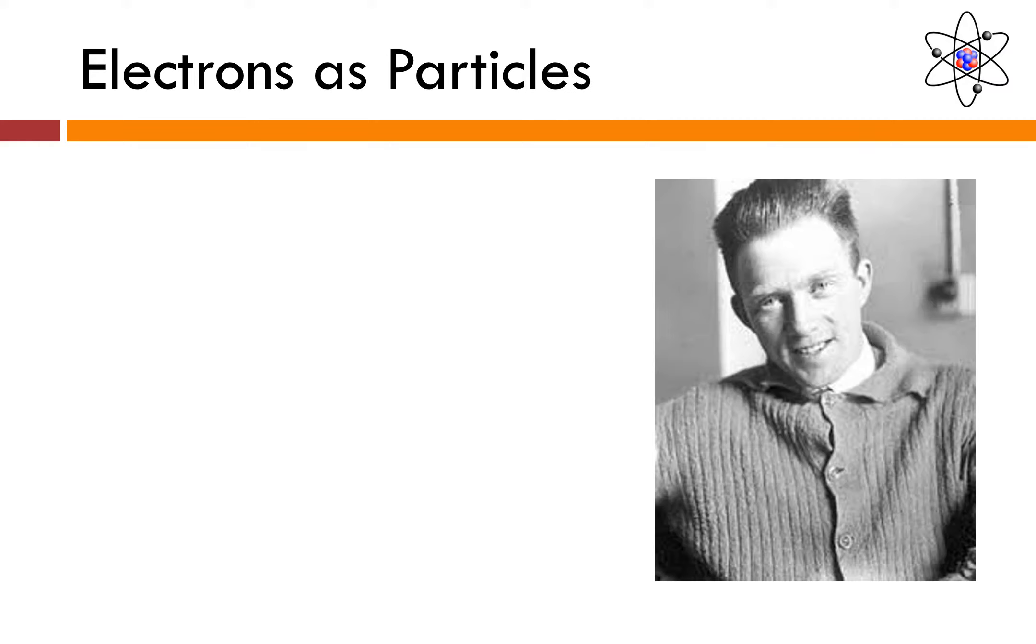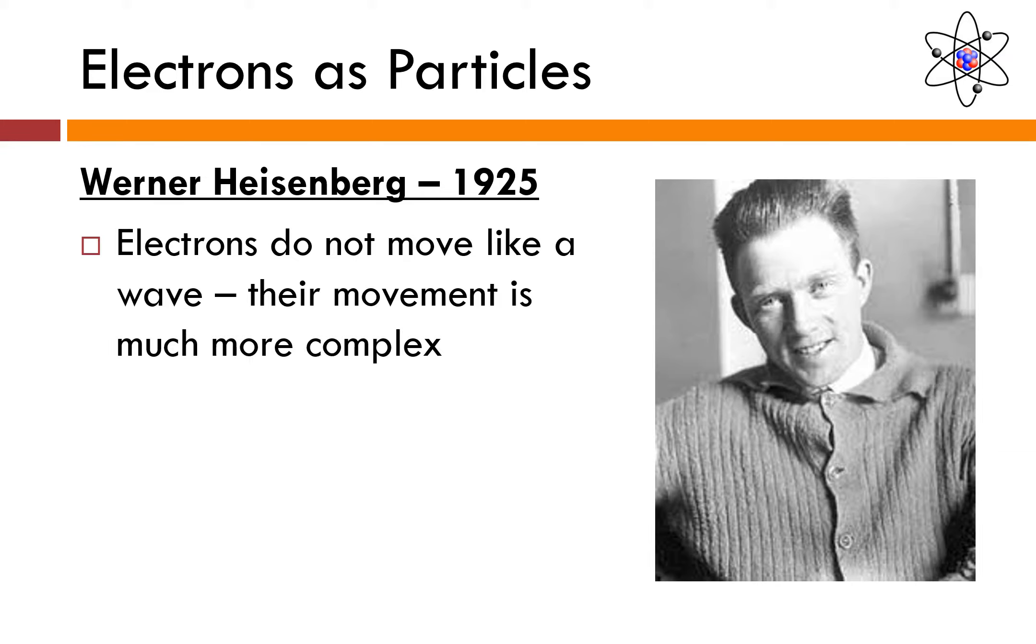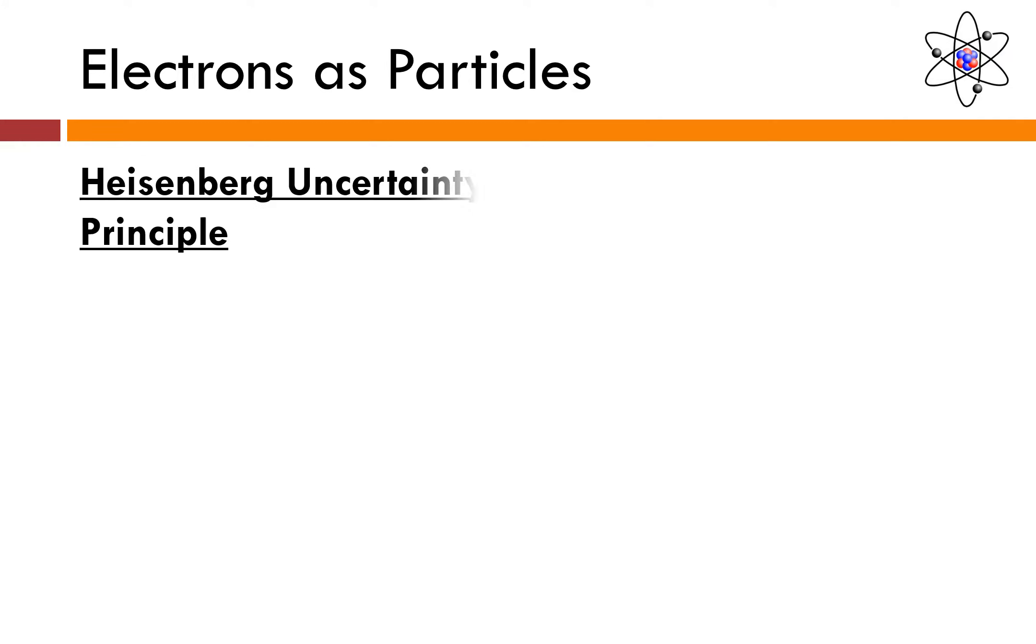At roughly the same time, German scientist Werner Heisenberg came up with a theory that described the behavior of electrons as particles. So he says that electrons do not move like a wave. Their movement is much more complex. To explain his theory, he used very, very mathematically complex matrices. So complex that it confused a lot of other scientists.